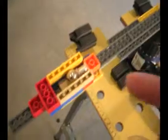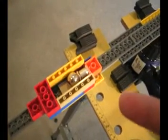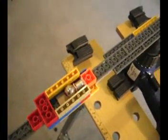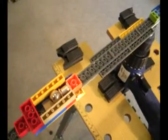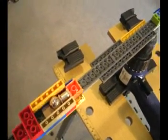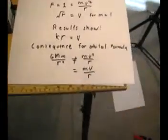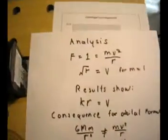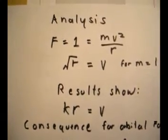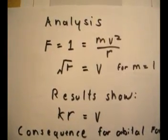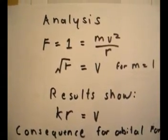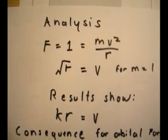And since force is equal to a constant, we can then calculate what is the relationship between force and velocity. So the analysis that we're expecting here is that we're expecting that the force is equal to the conventional mass times velocity squared over r.